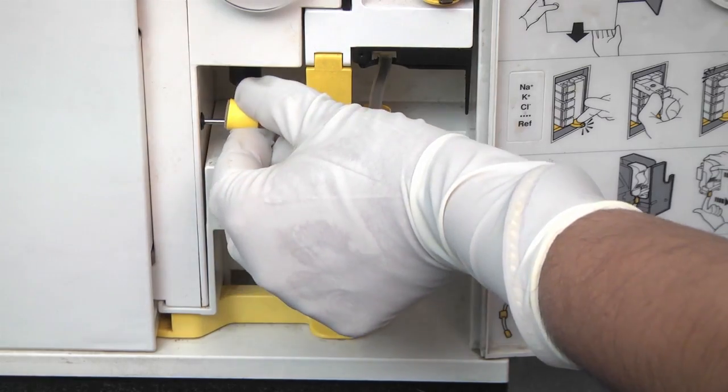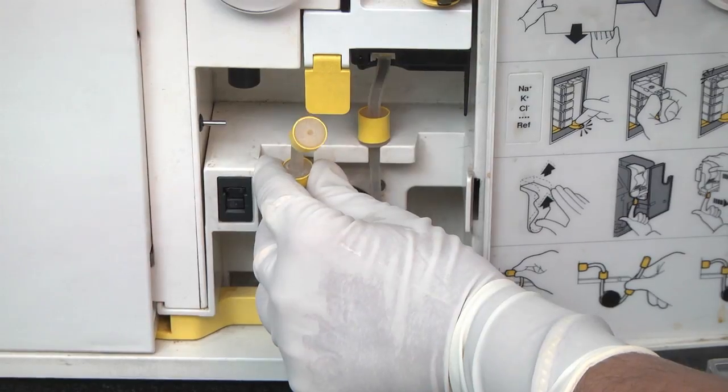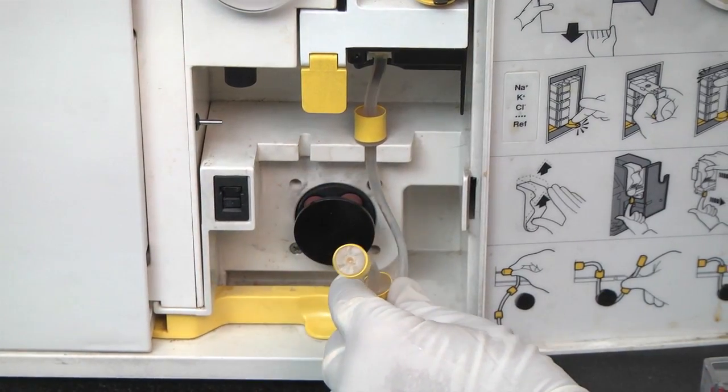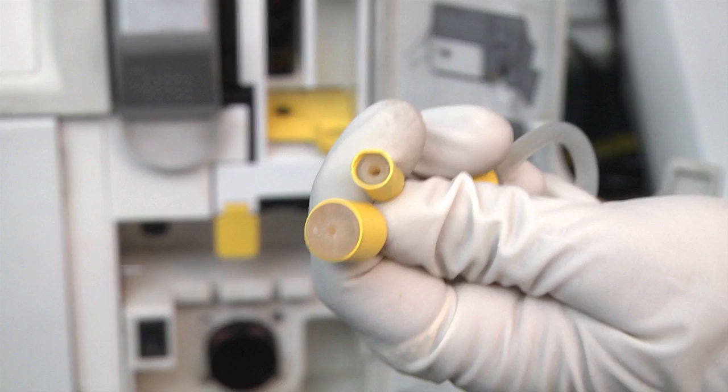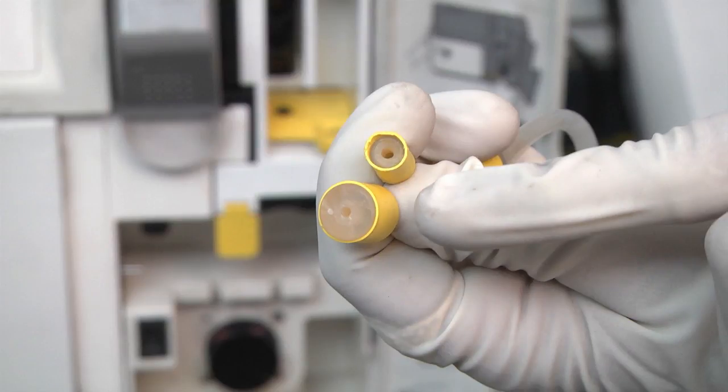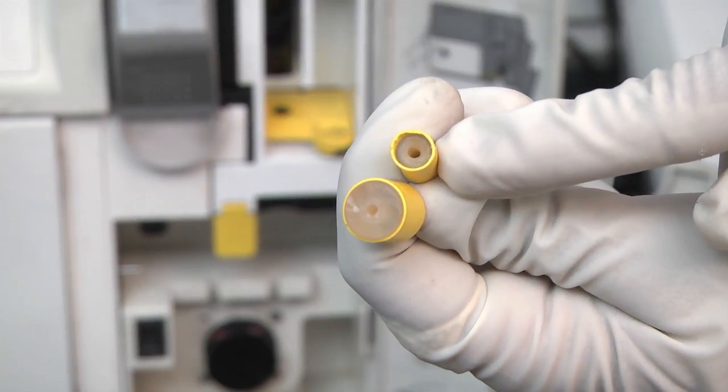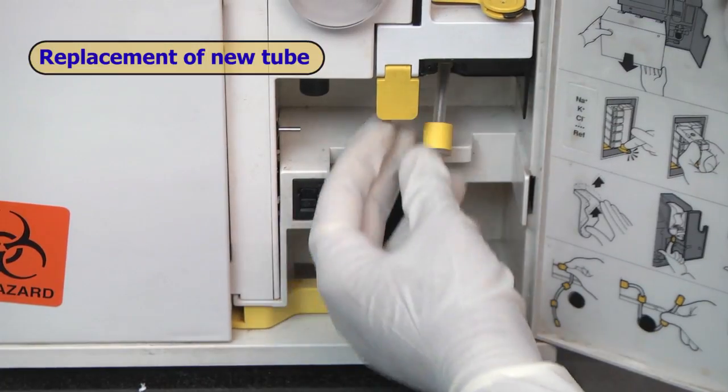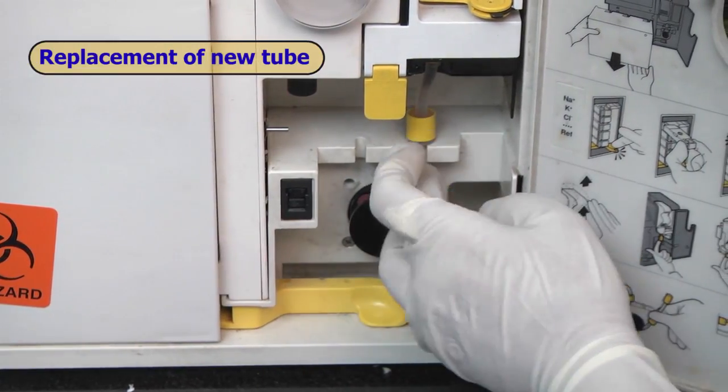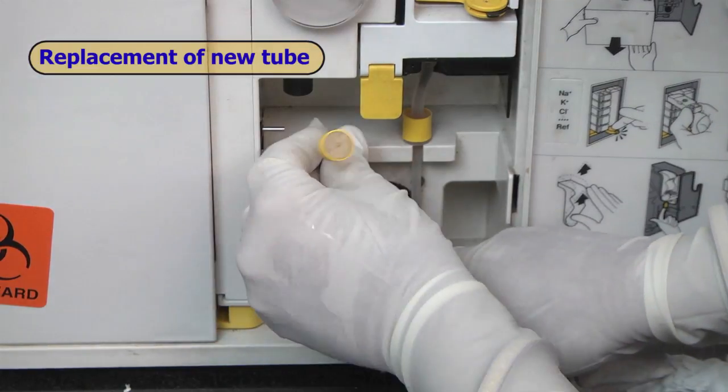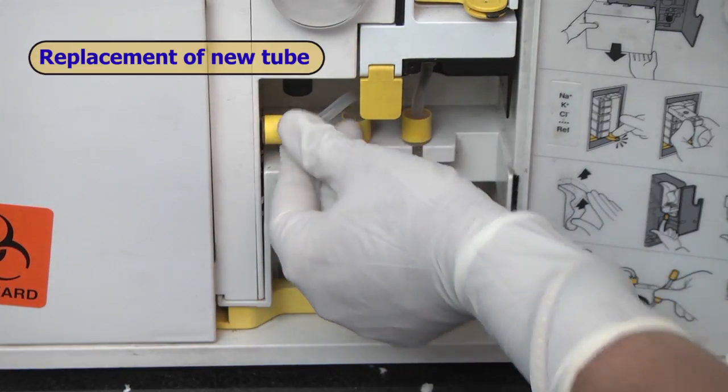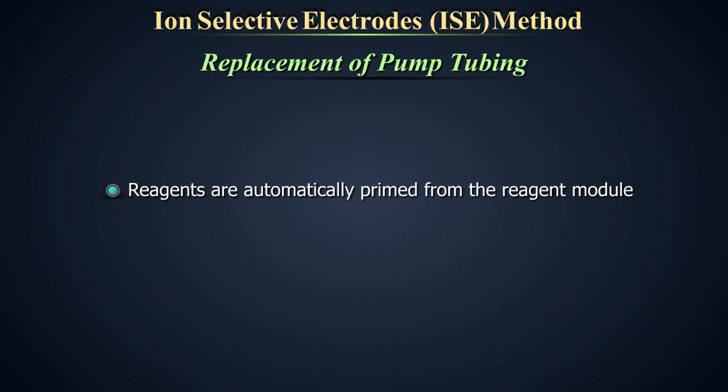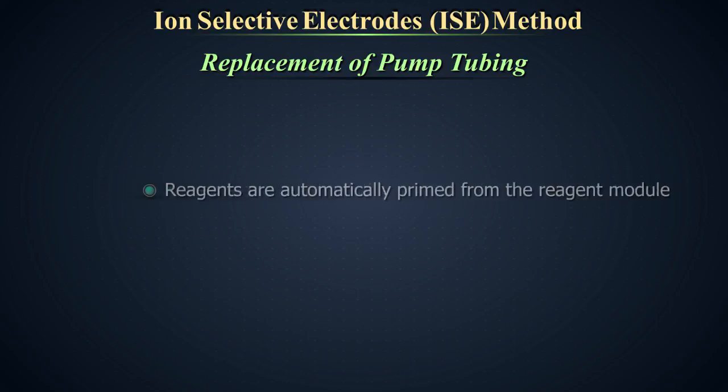Carefully remove the tube beginning from the collar on the left and then the collar on the right. The pump tube has a large collar on one end and a small collar on the other. Fix the large collar first, then fix it through the groove in the pump shelf. Bring it around the pump, then through the groove of the pump shelf again and finally fix the small collar. Reagents will be automatically primed from the reagent module. It is necessary to recalibrate when replacement is complete.